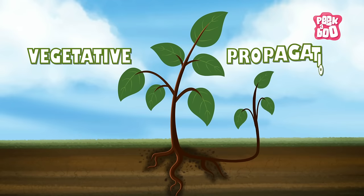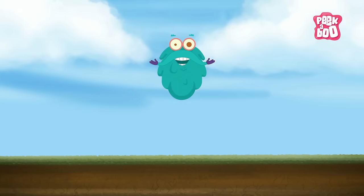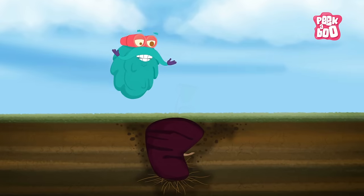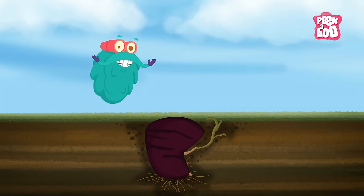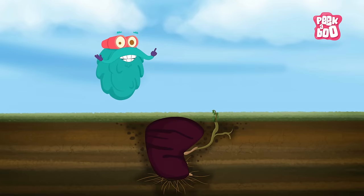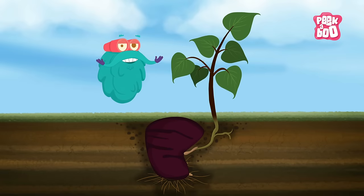Vegetative Propagation. Some plants give birth to new ones through vegetative propagation. Here, certain plants reproduce when buds form at their roots. And later, those buds grow into newborn plants.